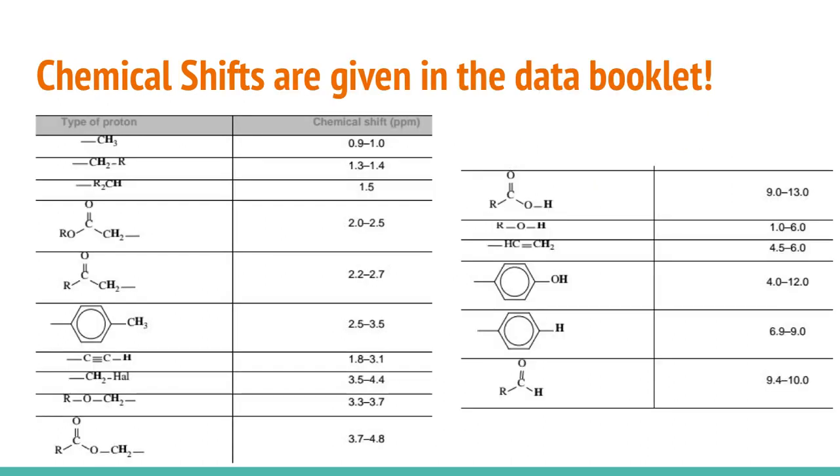The other thing we need to revisit are chemical shifts. Chemical shifts are measured for all different types of protons and they are given in the data booklet. I believe it is table 27 in the data booklet, so you can take a look at this. The way that you read this particular data table is that the protons that are highlighted, so bolded here, are the ones that you're looking at.